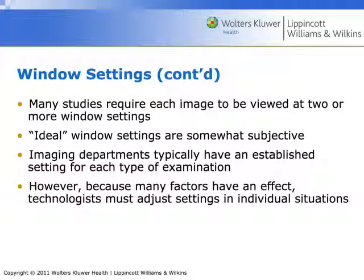Most studies require at least two different window settings. We'll do reconstructions of a series of lung windows and then a series of abdomen windows for just about everything we do. For a brain, we do a series of skull windows for the bony detail and a series for the white matter. Ideal window settings are kind of subjective — it depends on the viewer and the monitor. Image departments will have some preset window width and levels that are automatically generated by the CT scanner, and you can manipulate from there. Most CT scanners also have preset function keys at the top of the keyboard to quickly change the window width and level.